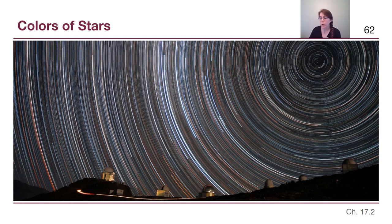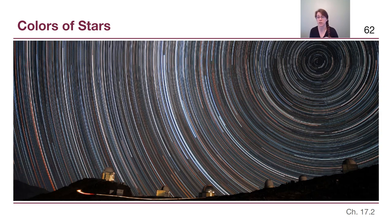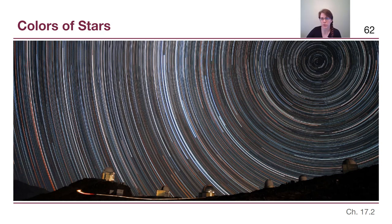We will pick back up in chapter 17 in the next video. Hopefully we now have a better sense of what we mean when we talk about star brightness — we have to distinguish whether we mean how bright stars look in the sky or their true luminosity — and we covered colors of stars, which is mostly a reminder of things from chapter 5. See you in the next video.